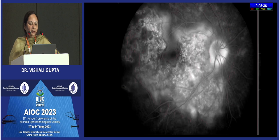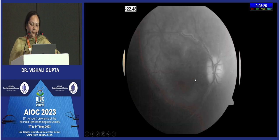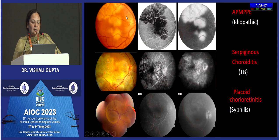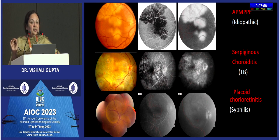The third disease presents similarly clinically but on fluorescein shows a ground-glass appearance — this is syphilis. So here are all three together: a yellow patch in the fundus for AMPPE, a yellow patch for serpiginous chorioretinitis, and the placoid kind of yellow patch with a ground-glass fluorescein pattern for syphilis. The point is that there is a very close call between infection and non-infection.